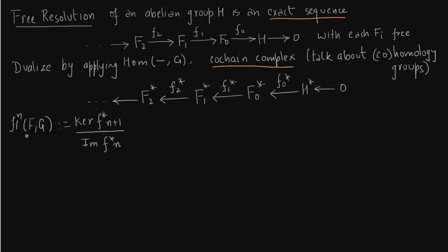The most important sequence we are interested in is the one that arises naturally: boundaries are contained in cycles, which are contained in the homology group. That is the natural sequence, and when we dualize it, we find that dualization is not exact.